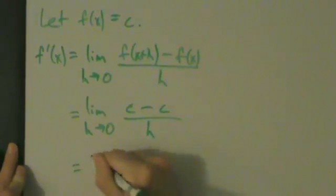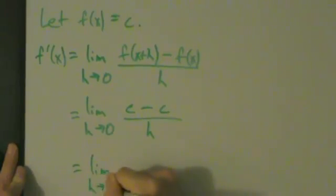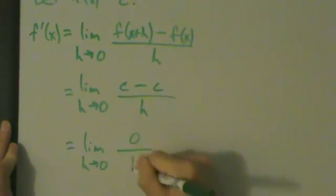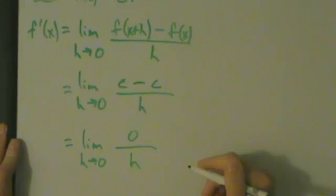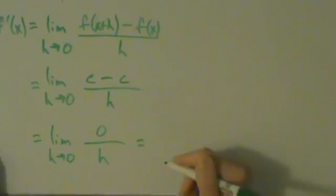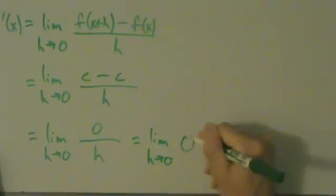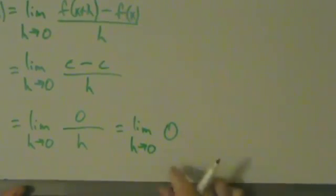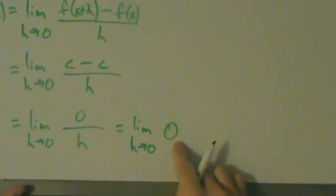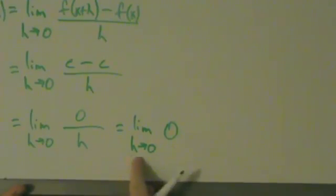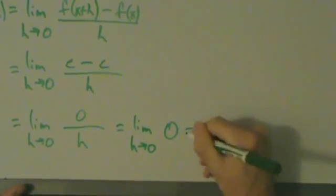So this basically just equals the limit as h goes to 0 of 0 divided by h. And 0 divided by h, of course, is just 0. So this is the limit as h goes to 0 of 0. And we know that the limit of any constant is just that constant, no matter what's happening over here. So this is just going to be 0.